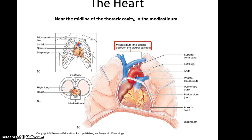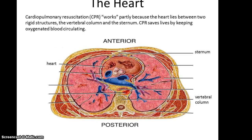This area is referred to as the mediastinum. It's located between the two lungs, which are in their own pleural cavities, and it's technically in its own little cavity called the pericardial cavity. The cool thing about the location of the heart is it's between two very hard, rigid structures — the vertebral column and the sternum — which is why people are able to use CPR, or cardiopulmonary resuscitation, when someone's heart stops, to help keep oxygenated blood circulating in the body.